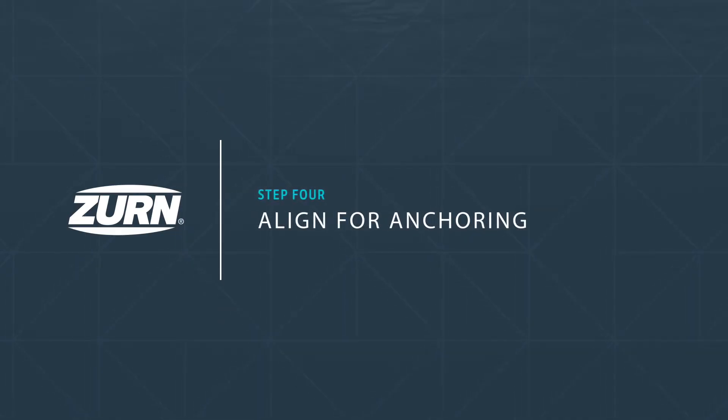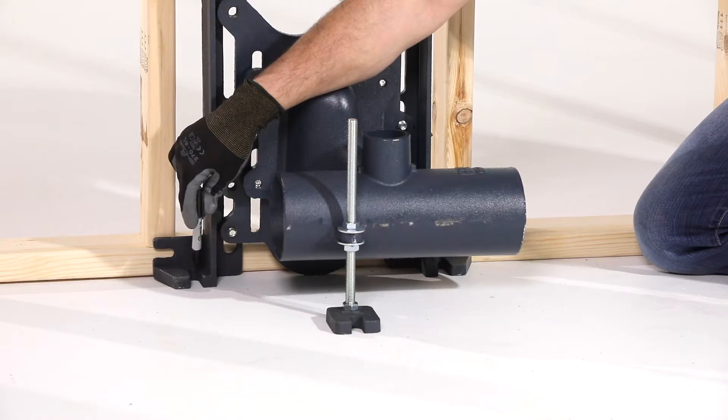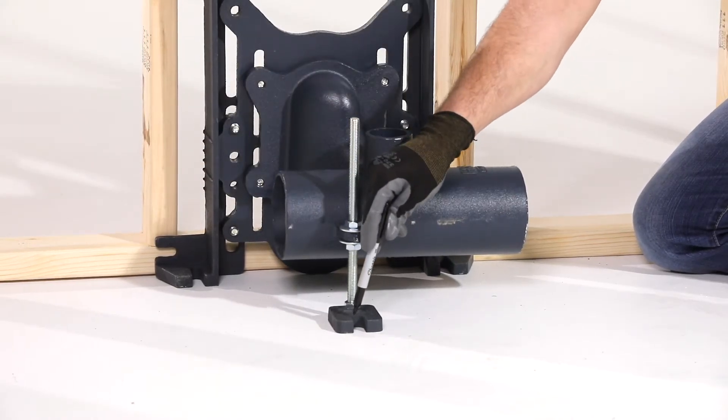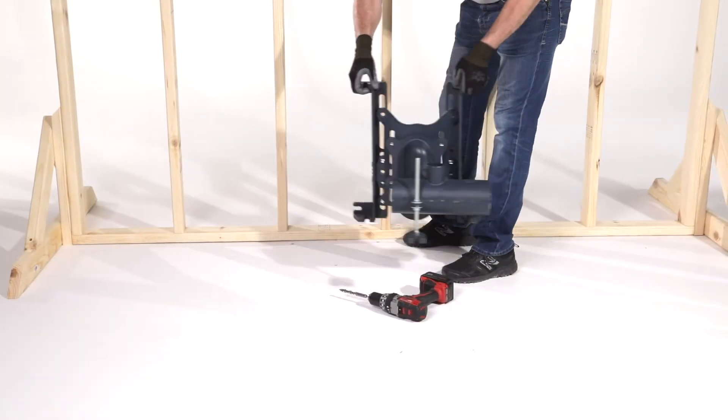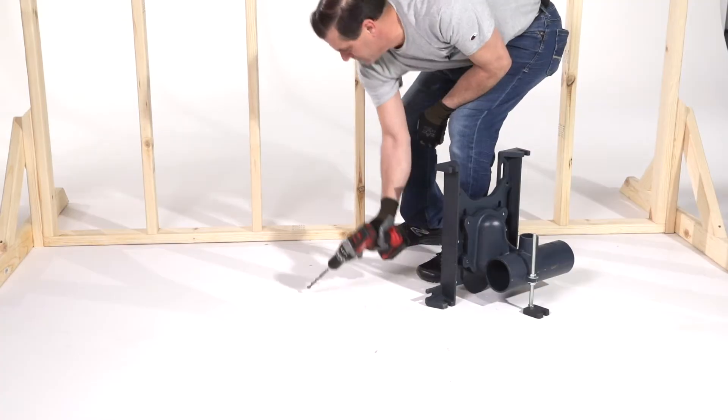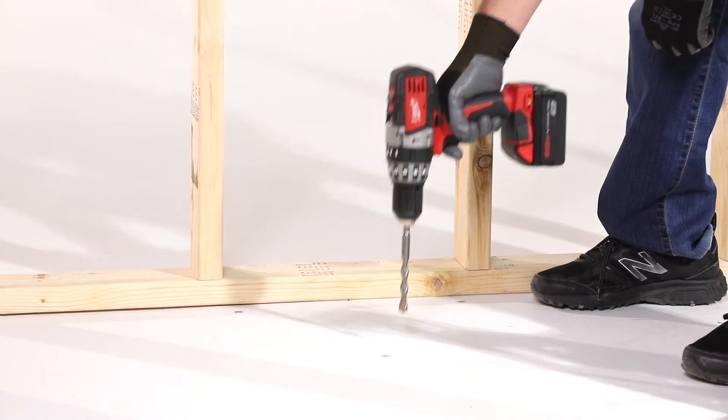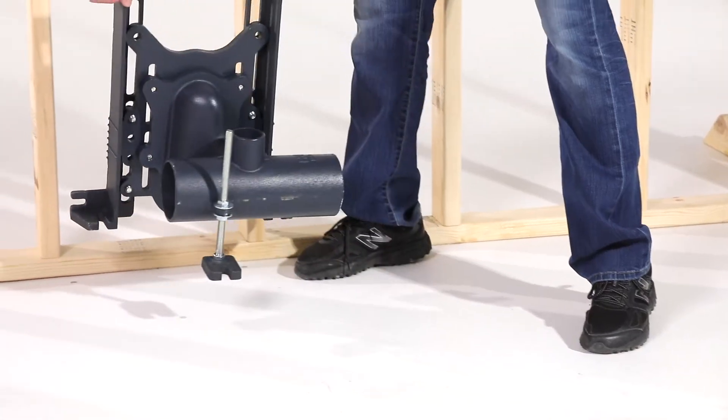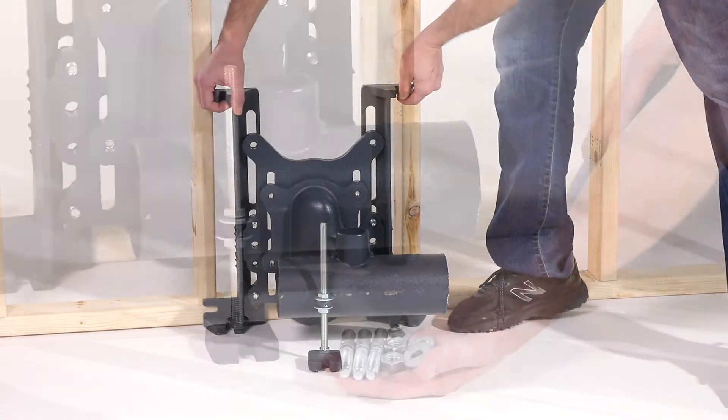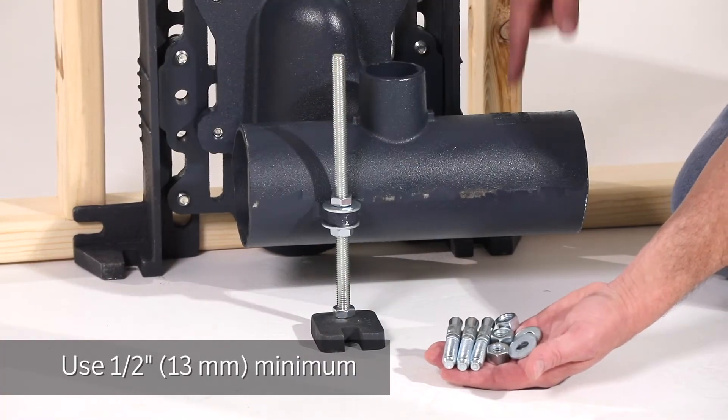Step four: align for anchoring. Align the carrier with the waistline. Mark locations on the floor for the anchoring studs. Prep the floor for the concrete anchors. Place the carrier back into position. Use half-inch anchors to lag down the feet. Follow the anchor manufacturer's instructions.